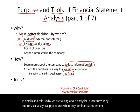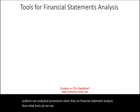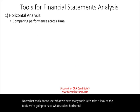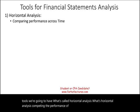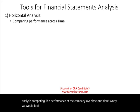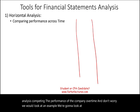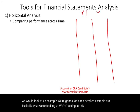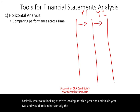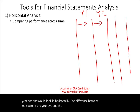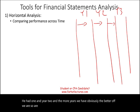Now, what tools do we use? We have many tools. We're going to have what's called horizontal analysis. What's horizontal analysis? Comparing the performance of the company over time. We're going to look at a detailed example. Basically, we're looking at year one and year two and looking horizontally at the difference between them. The more years we have, obviously, the better off we are. So we are looking across time.